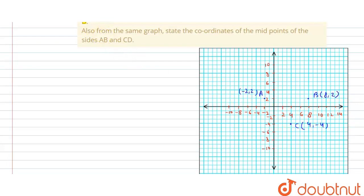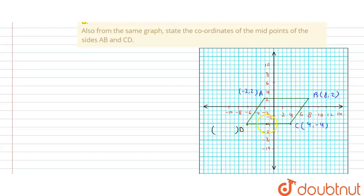Then we join all the lines — join A with B, join A with C, and join B with C. We then complete the parallelogram by drawing a line parallel to AB. Counting the blocks: one, two, three, four, five on each side. The unknown fourth point D has coordinates (-4, -6).